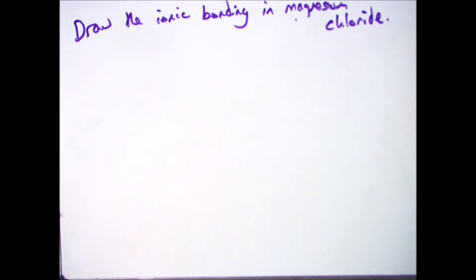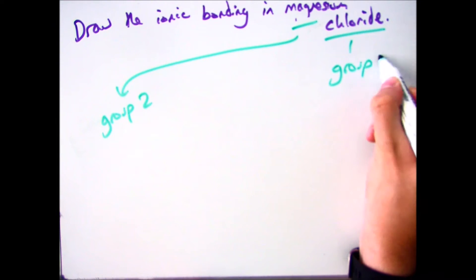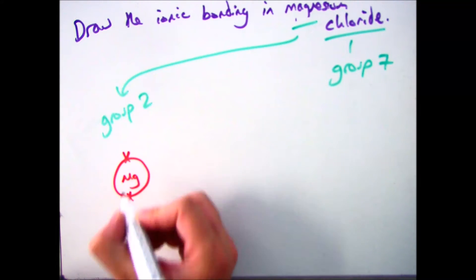Okay, so in an exam, if you got the question, draw the ionic bonding in magnesium chloride, the first thing you need to do is actually draw the outer shells of both the metal and the non-metal.